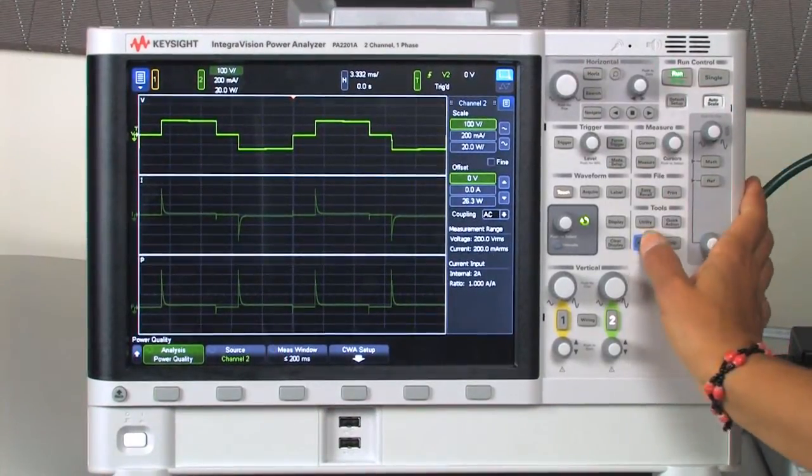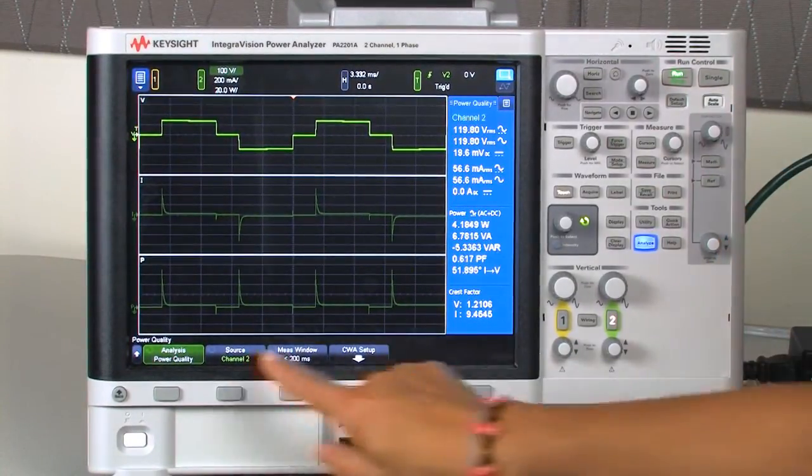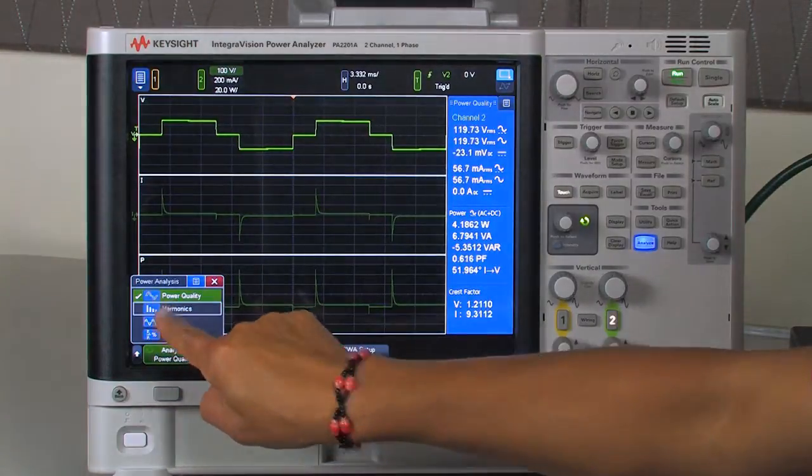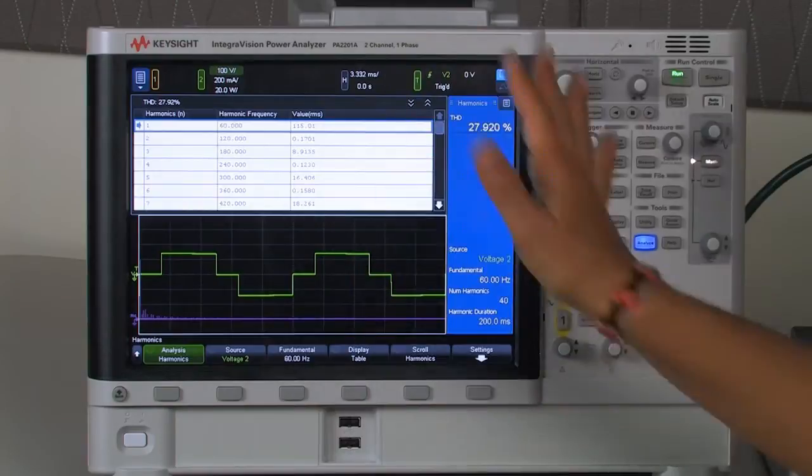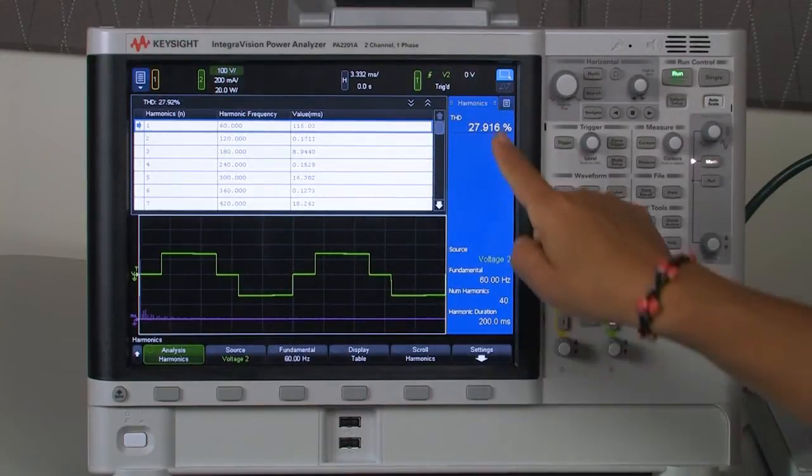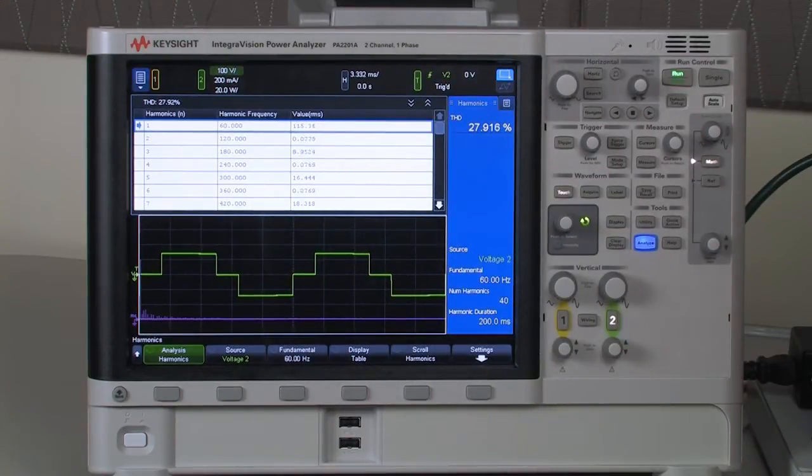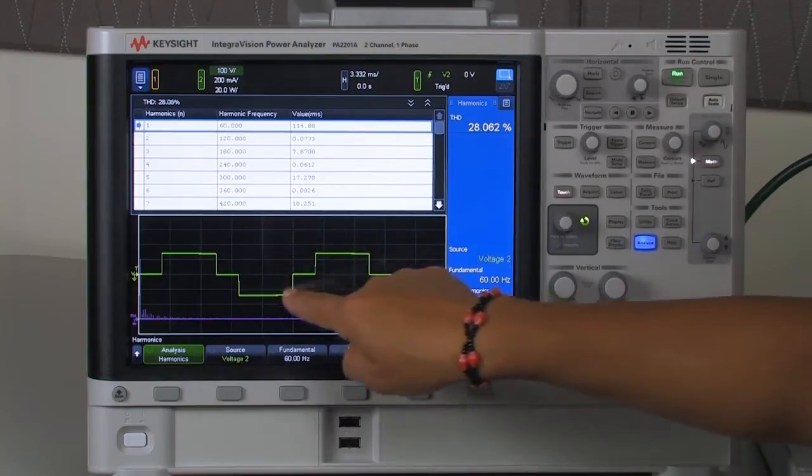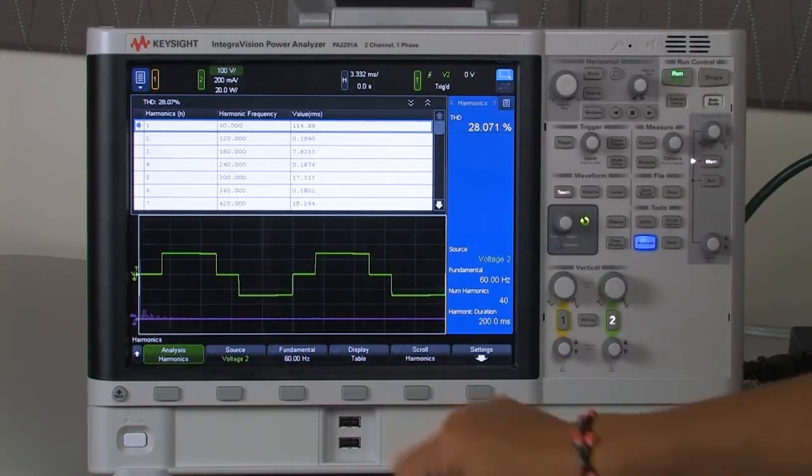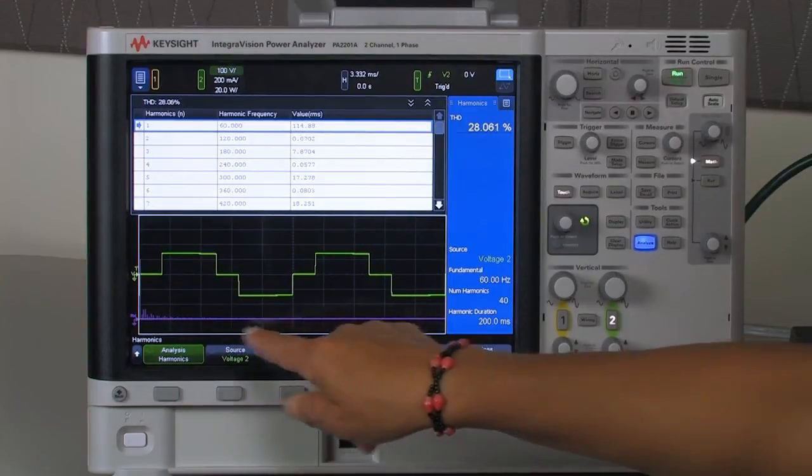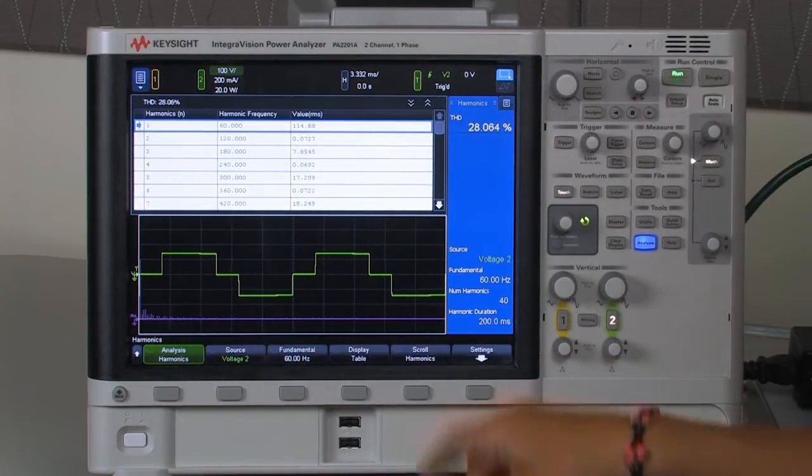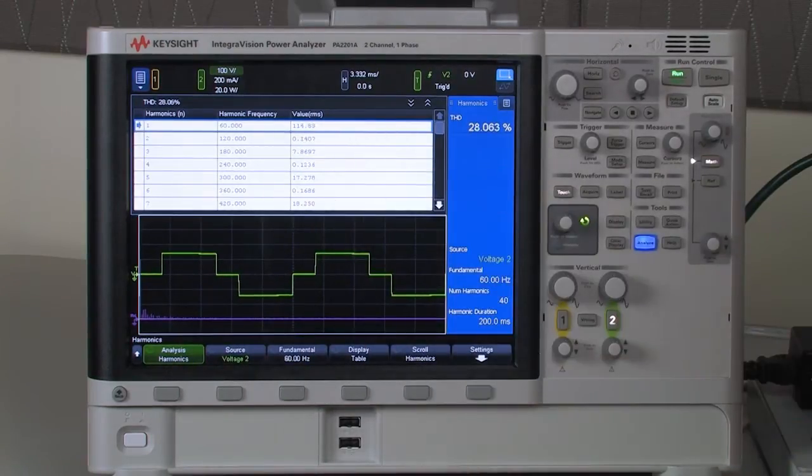So all I need to do now is push the Analyze button and from the menu I pick Harmonics. Quickly I can evaluate that my harmonic distortion on voltage is about 28%. At the same time I can observe the signal itself in time domain. I also see DFT on the proper line and I have the values of each harmonic in the table.